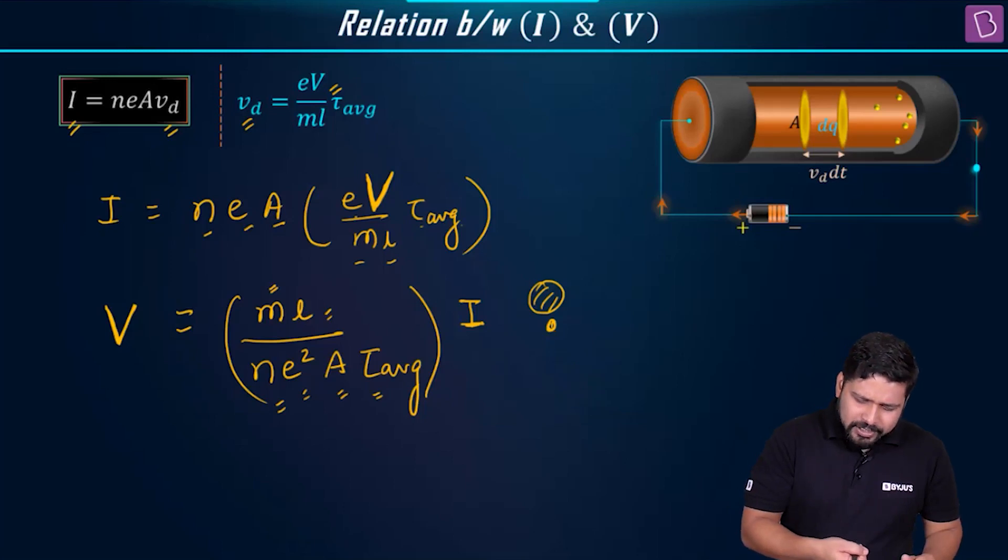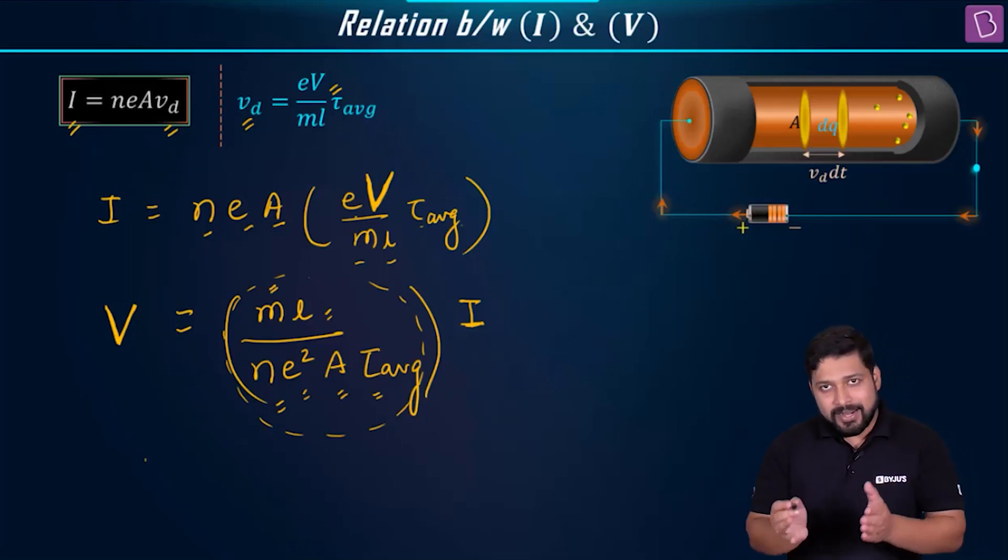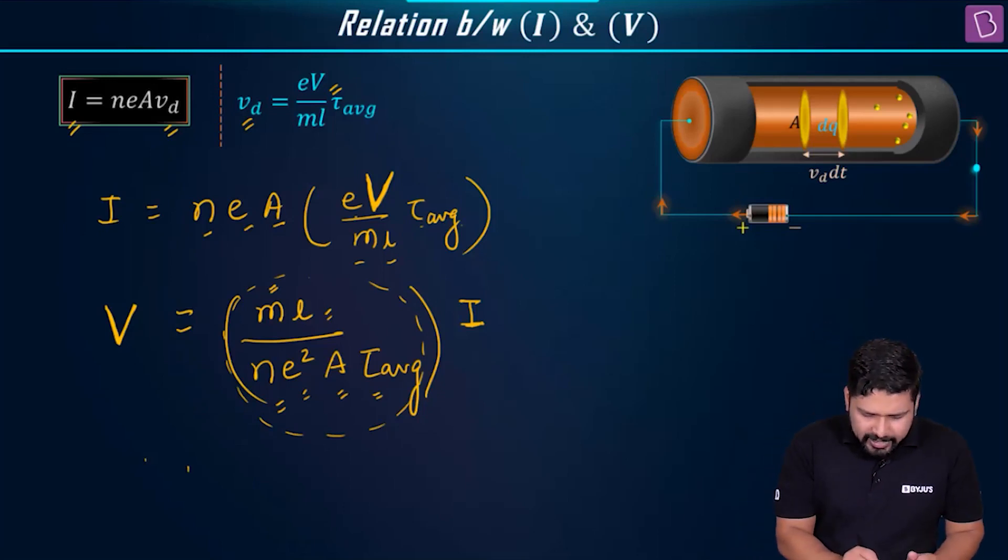Given that all the physical conditions remain same, then can I assume this entire thing to be a constant? Can I assume this entire thing to be a constant? Of course, I can. And if that be the case, if length is same, if area is same, number of electrons per unit volume is same, all those things are same.